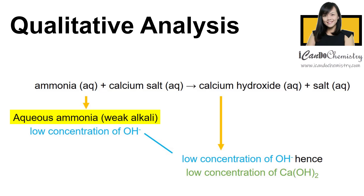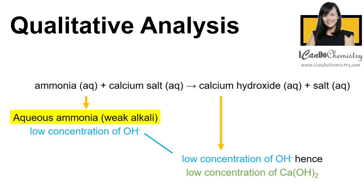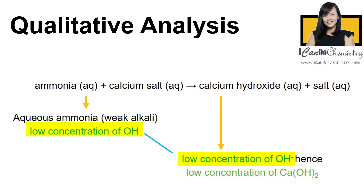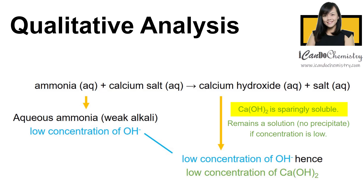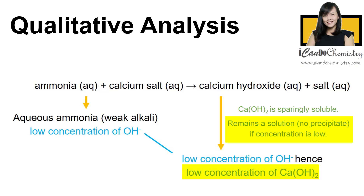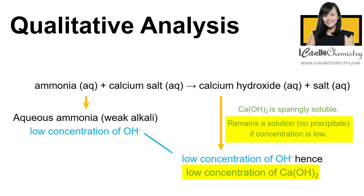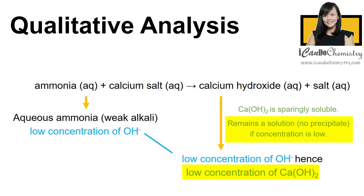Aqueous ammonia is actually a weak alkali, so it partially ionizes in aqueous solution to form a low concentration of hydroxide ions. We know that calcium hydroxide is sparingly soluble, so if the concentration of hydroxide ions is low, then calcium hydroxide will remain soluble and hence no precipitate will be observed.